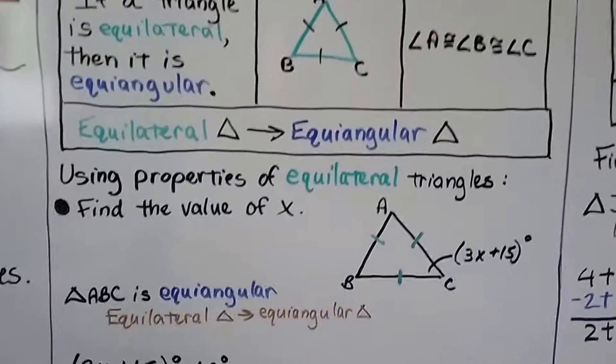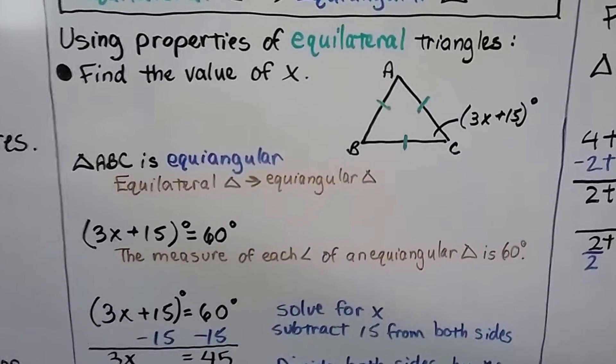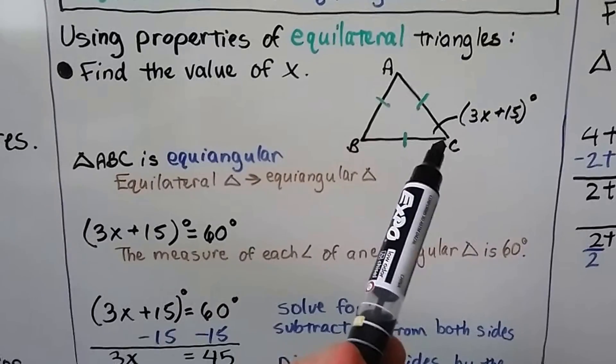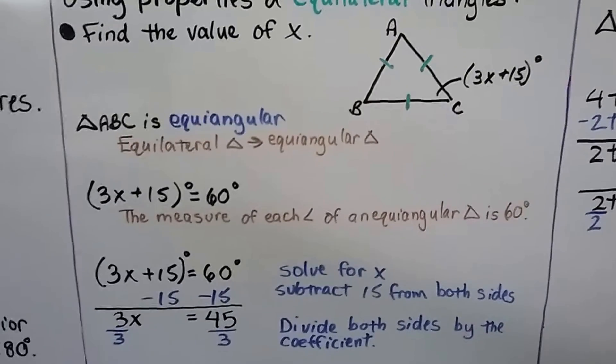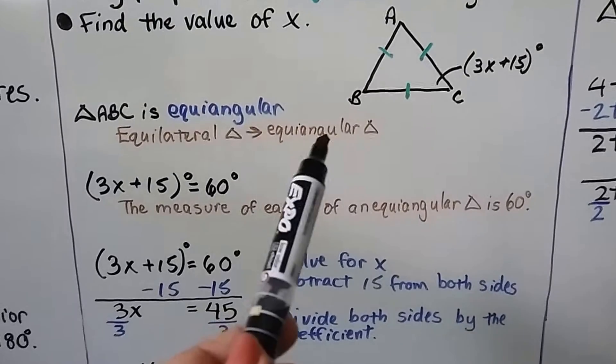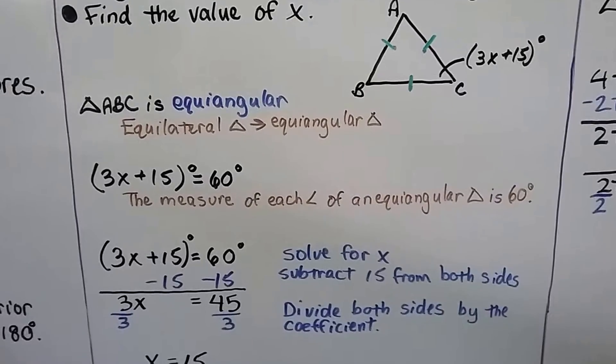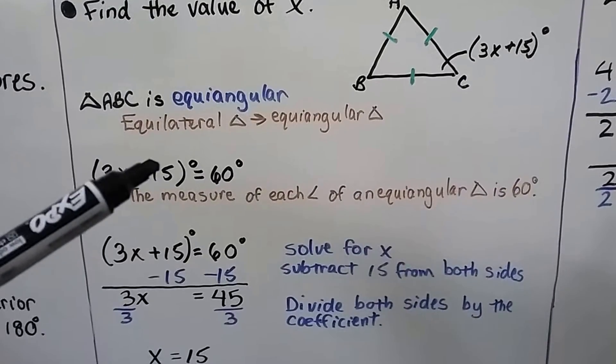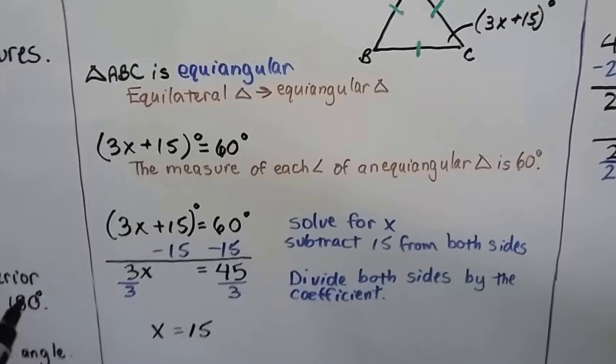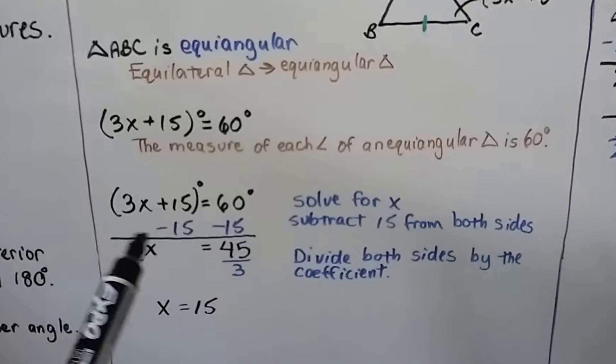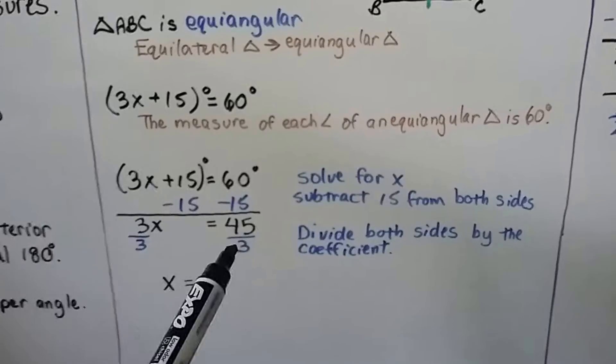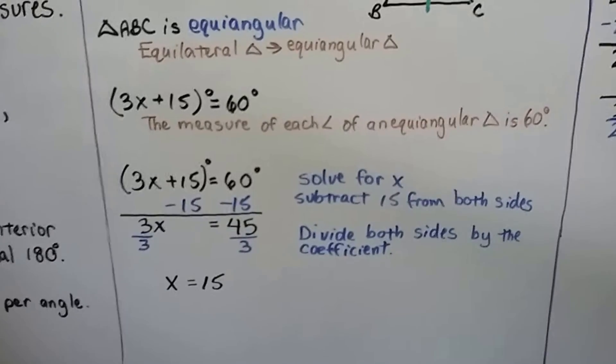Using properties of equilateral triangles, we can find the value of x. We see this triangle here with three congruent sides and it's saying that this angle C is 3x plus 15. Well, triangle ABC is equiangular because equilateral triangles therefore equiangular triangles. We have 3x plus 15 degrees equals 60 degrees because the measure of each angle of an equiangular triangle is 60 degrees. We can solve for x. We subtract 15 from both sides. We get 3x equals 45. We divide both sides by the coefficient 3 and we get x is equal to 15.